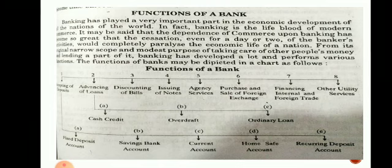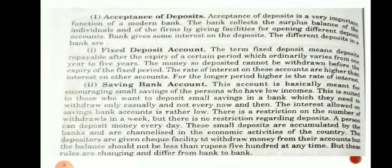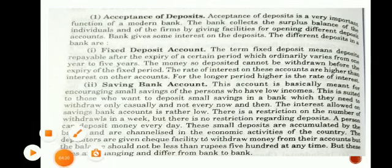So this is the first point: Acceptance of Deposits. A modern bank accepts deposits. Acceptance of deposit is the first and primary function of a modern bank.